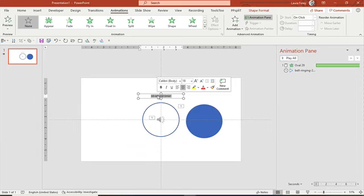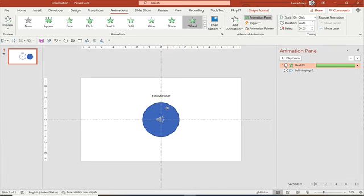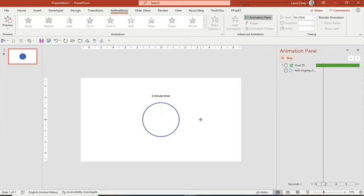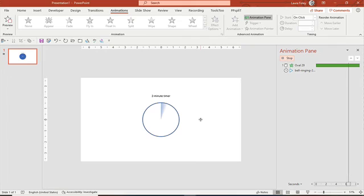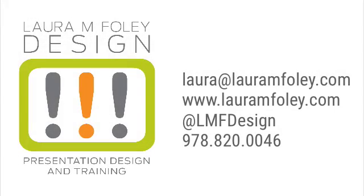Then you update the label to say 'two minute timer' so that people know the whole circle will take two minutes to fill in. That's it — very quick and very easy to create this timer, and it's going to help your audience keep track of the time they have to complete the task you've allotted for them.